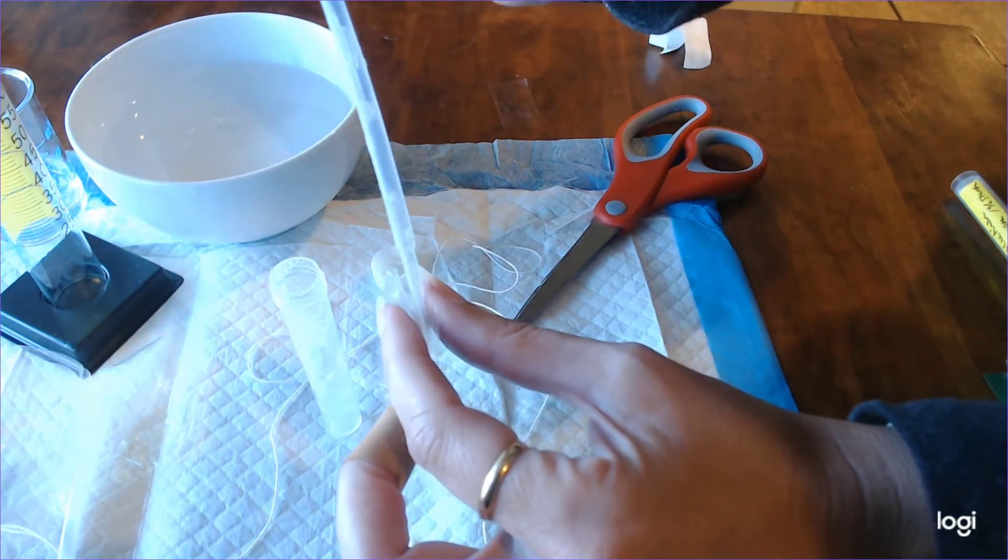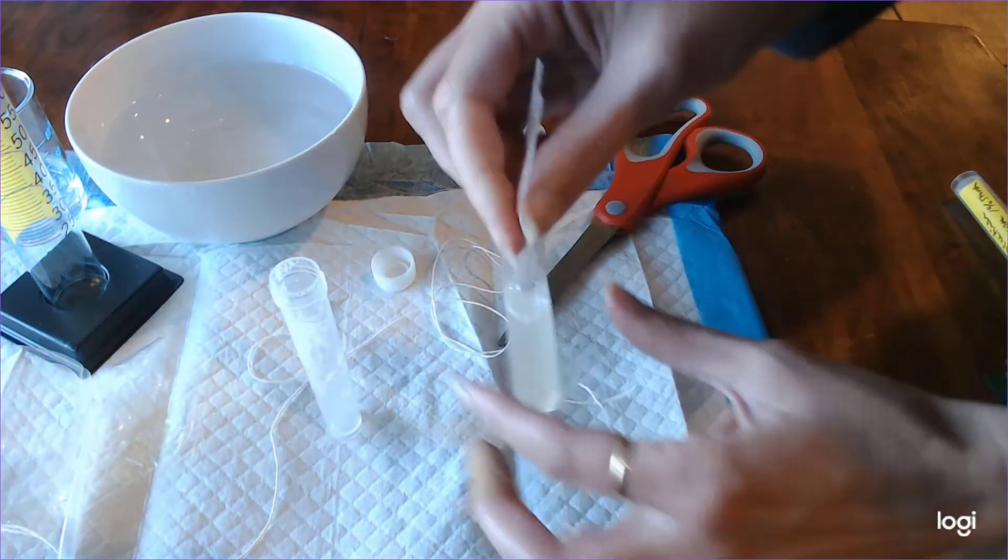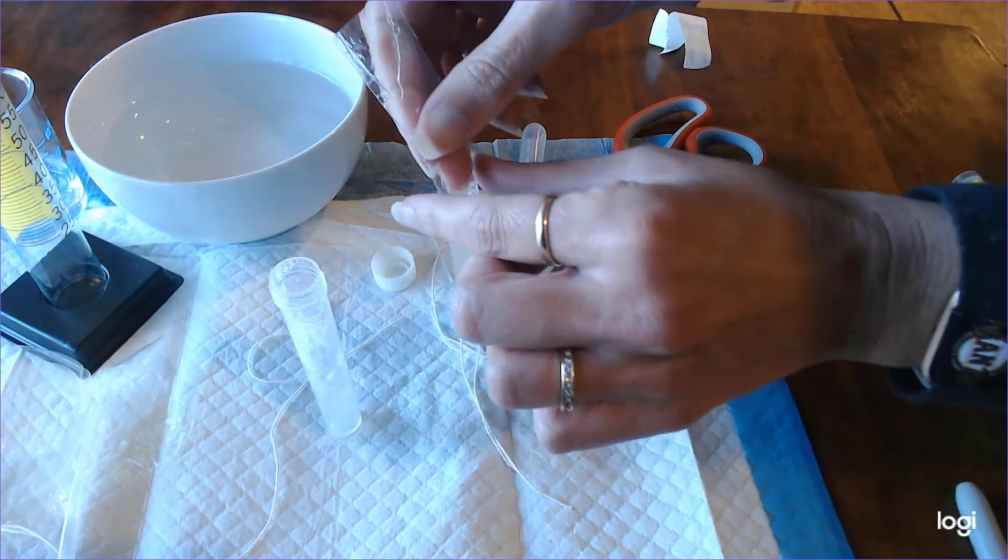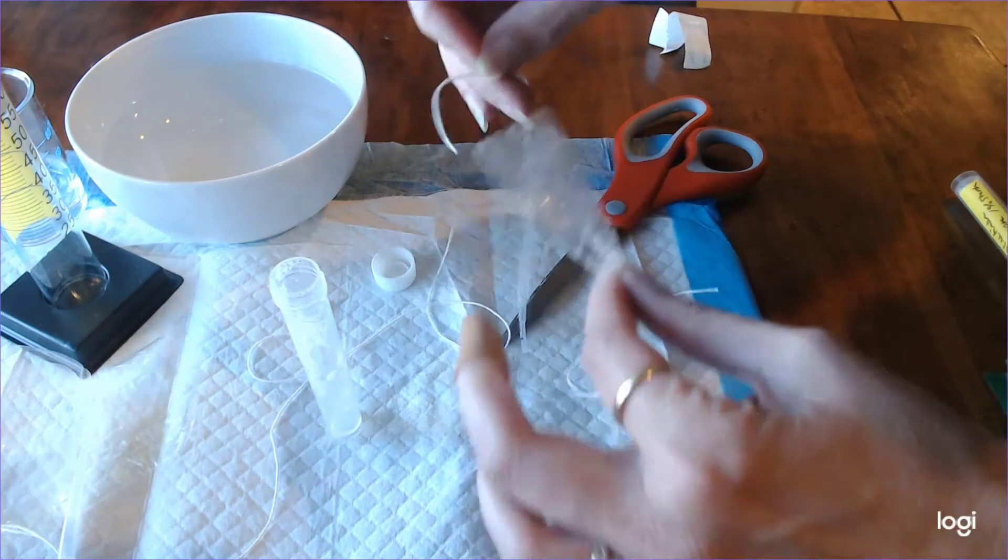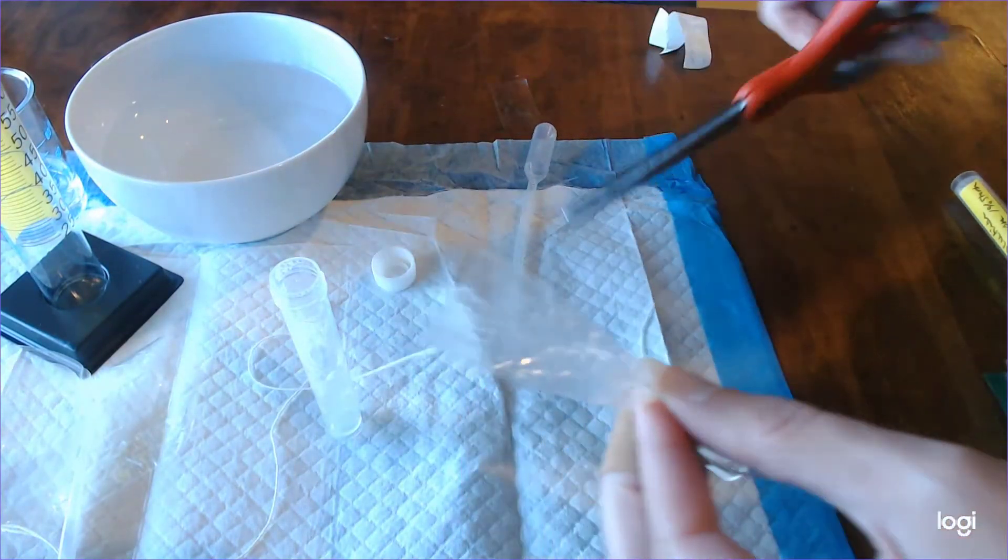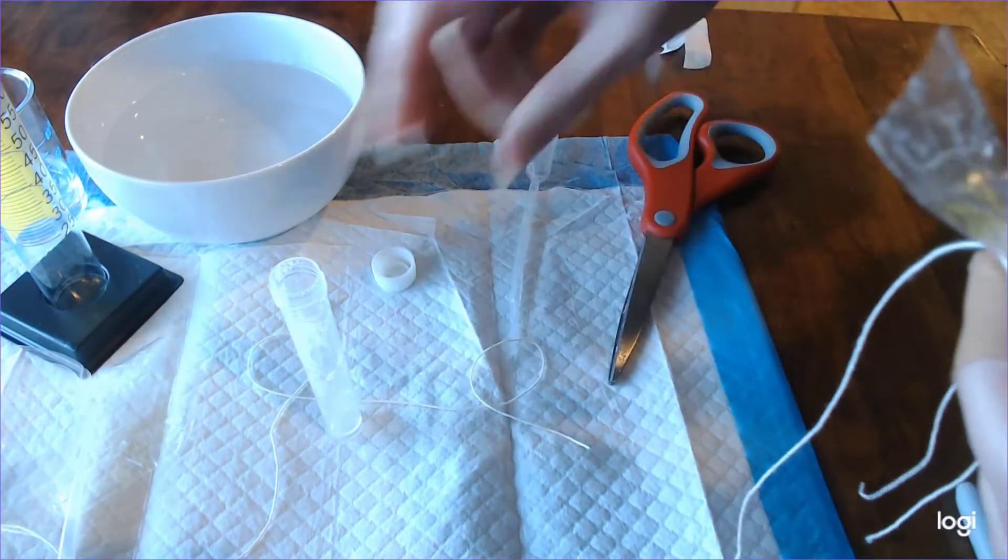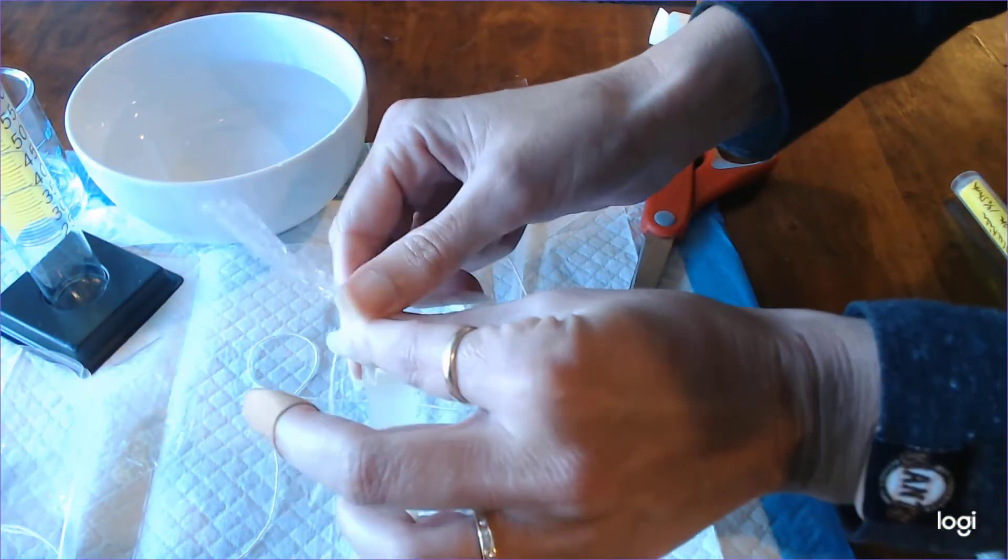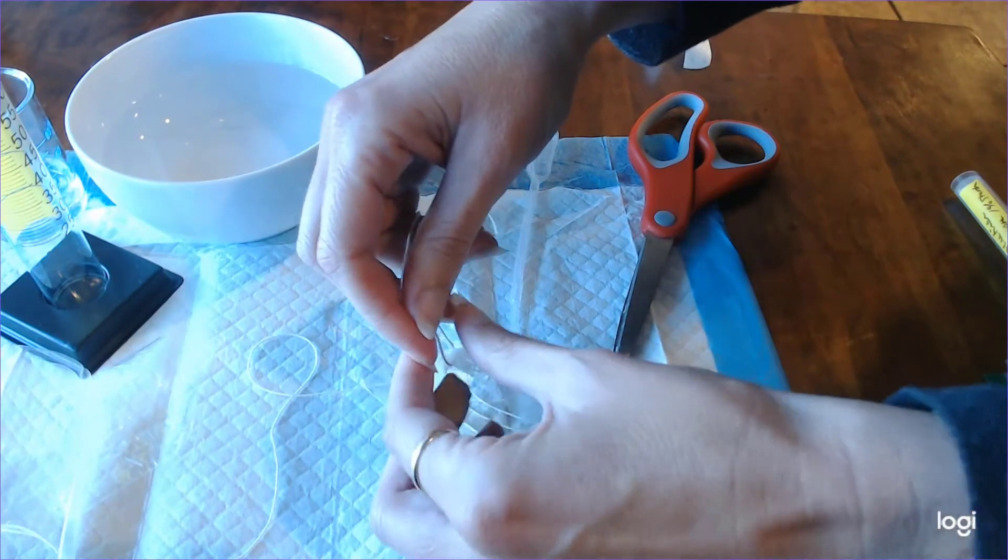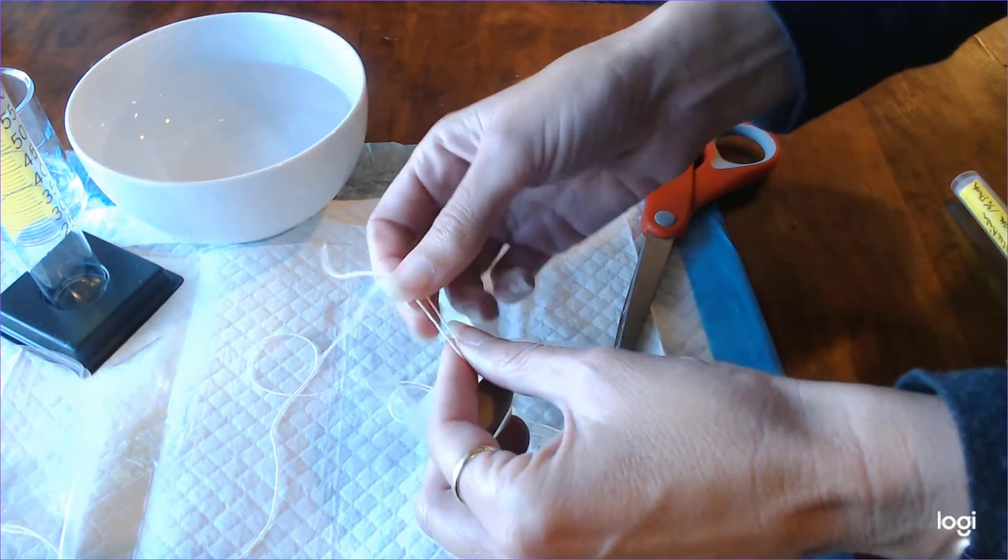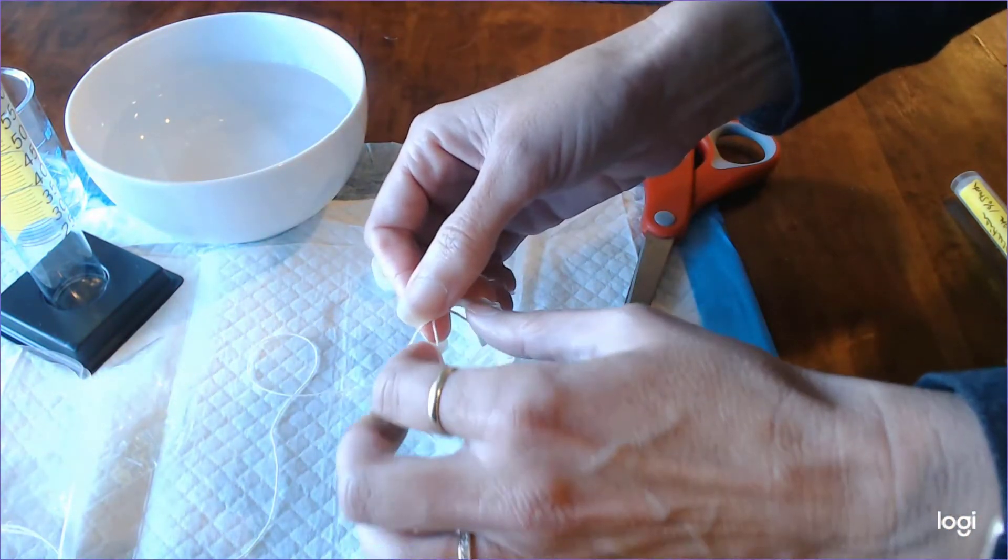Okay you have transferred approximately 10 mils of solution into that dialysis tubing and now what we're going to do is we are going to tie off the other end. Now you'll want to tie off the other end like you did the first part, so you're going to do a pretty tight a couple knots, but you want to tie it just above where the solution ends.